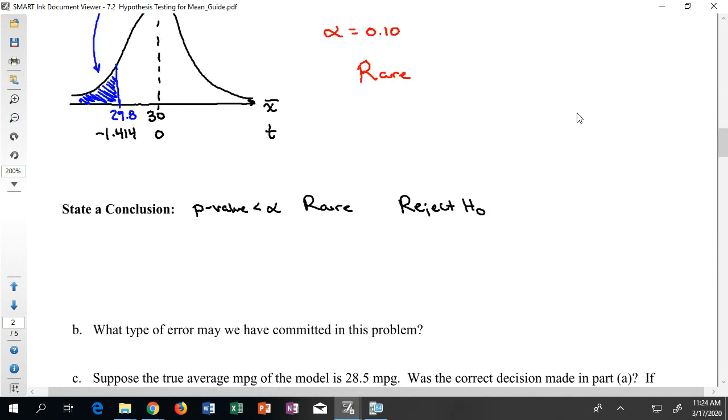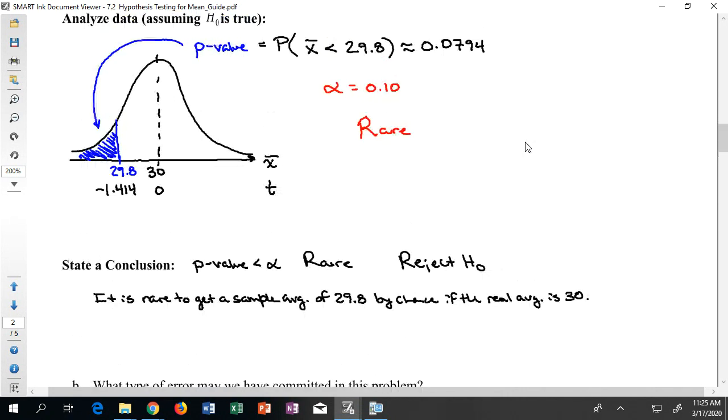I still want to write out my conclusion, though, in the same way we did in the last section. Here we go. I can start by saying it is rare to get a sample average of 29.8 by chance if the real average is 30. That's what we saw. That describes the picture. That describes the p value that we got. That's what we're looking for.